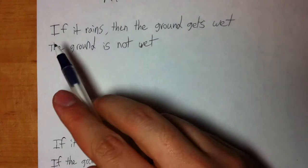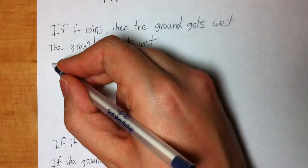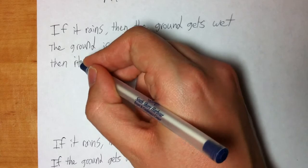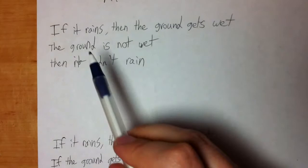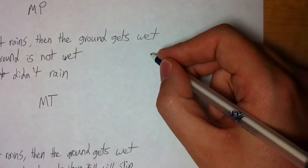Let's look at another example. If it rains then the ground gets wet, but the ground is not wet. So if I told you that if it rains the ground's going to get wet, but the ground's not wet — what would you conclude? If it rains then the ground gets wet, but it must not have rained. You can say it didn't rain, because we know that rain makes the ground wet, and the ground isn't wet. So this rule is called modus tollens, or MT.